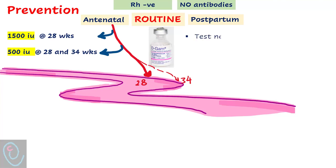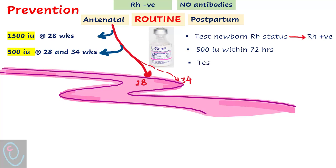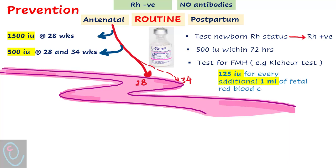In the postpartum period, test for neonatal RH status. If the neonate is RH positive, administer 500 international units of Anti-D within 72 hours of delivery. In addition, test for fetomaternal hemorrhage, for example with the Kleihauer test. For every additional 1 ml of fetal blood, 125 international units of Anti-D is required to neutralize it — that is, 500 international units for every 4 ml of fetal blood.